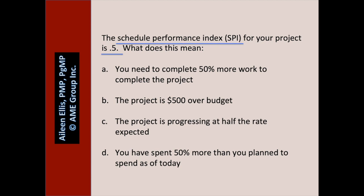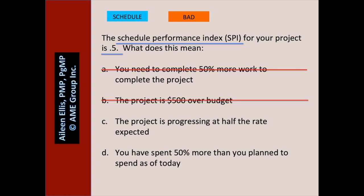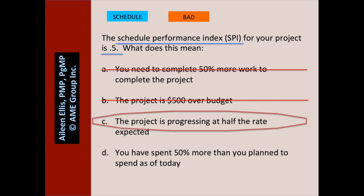The schedule performance index for your project is 0.5. What does this mean? Pause the video and answer the question. Is this about schedule or cost? It's about schedule. 0.5 — is that good or bad? That's bad. A: you need to complete 50% more work to complete the project — we have no idea; schedule performance index doesn't tell us about what we need to complete the project. B: the project is $500 over budget — we have no idea. C: the project is progressing at half the rate expected — this is the answer; with SPI of 0.5, we're moving at half the rate expected. D: you have spent 50% more than you planned to spend as of today — D relates to cost.